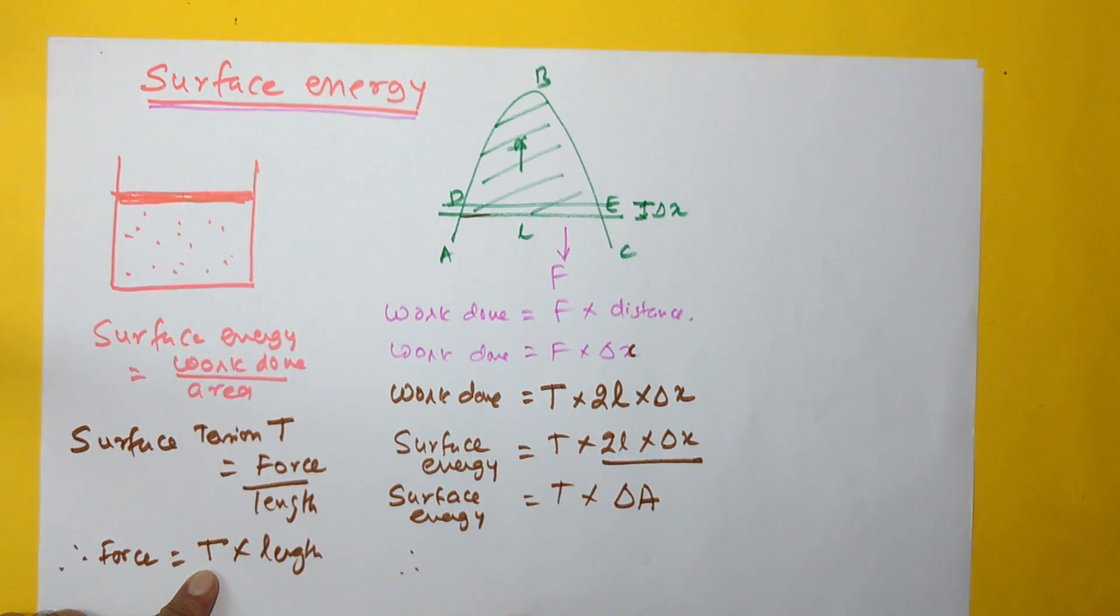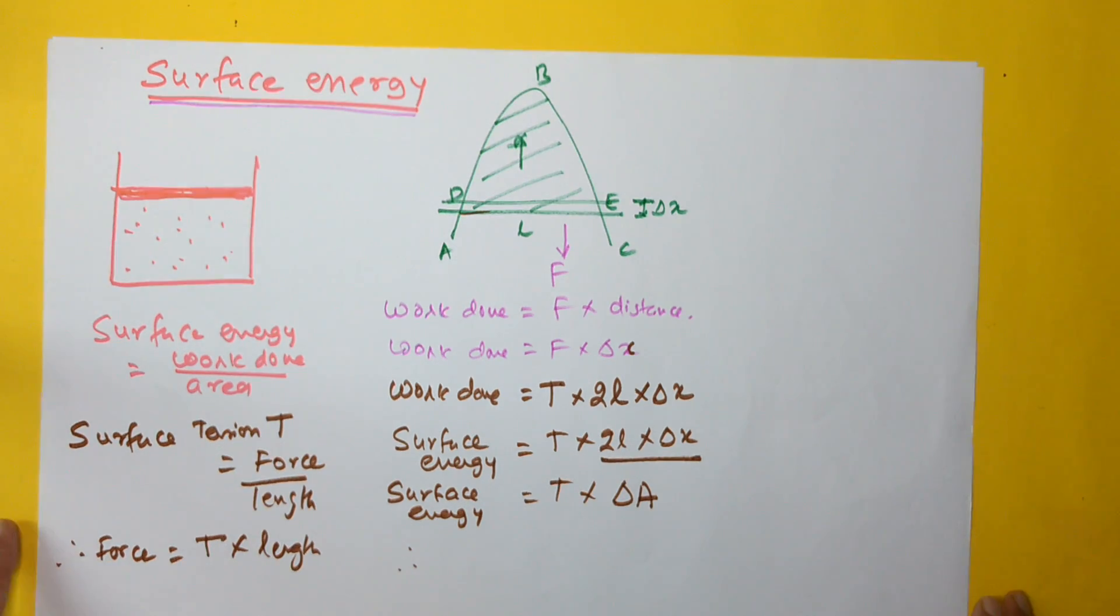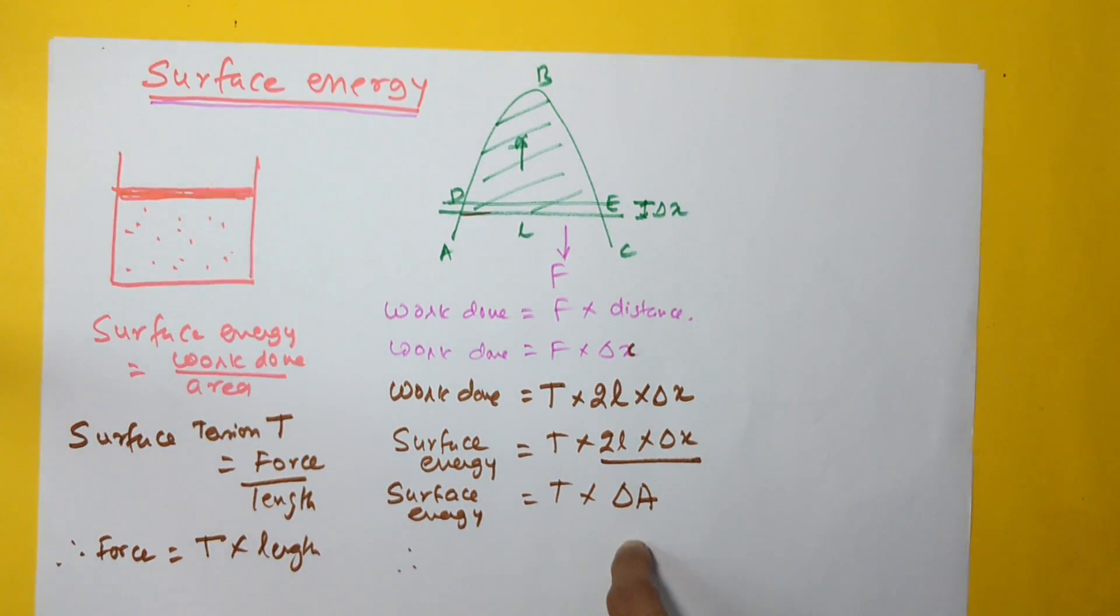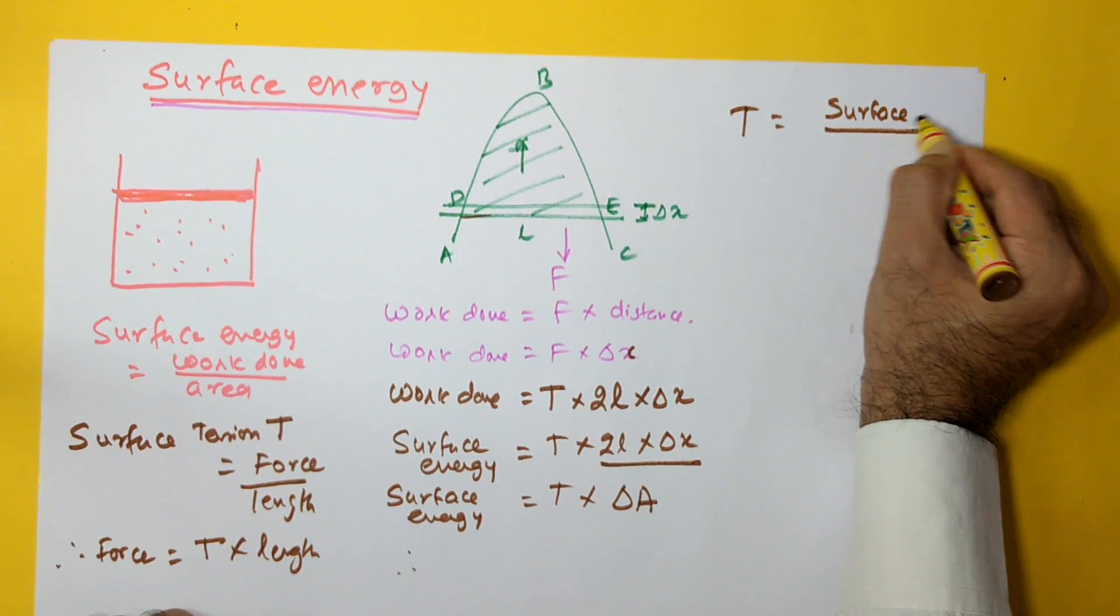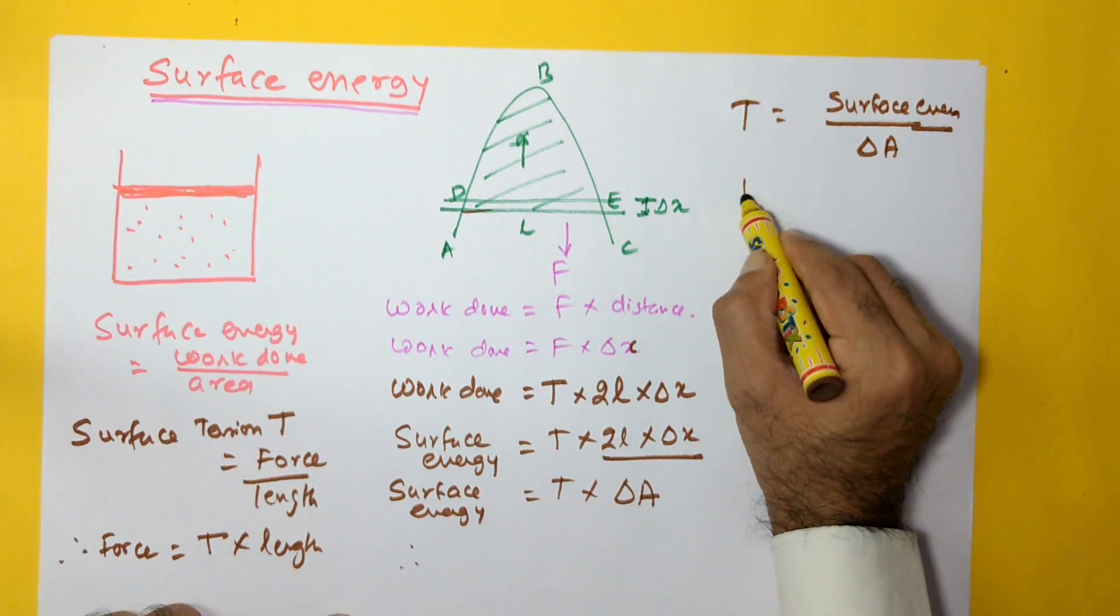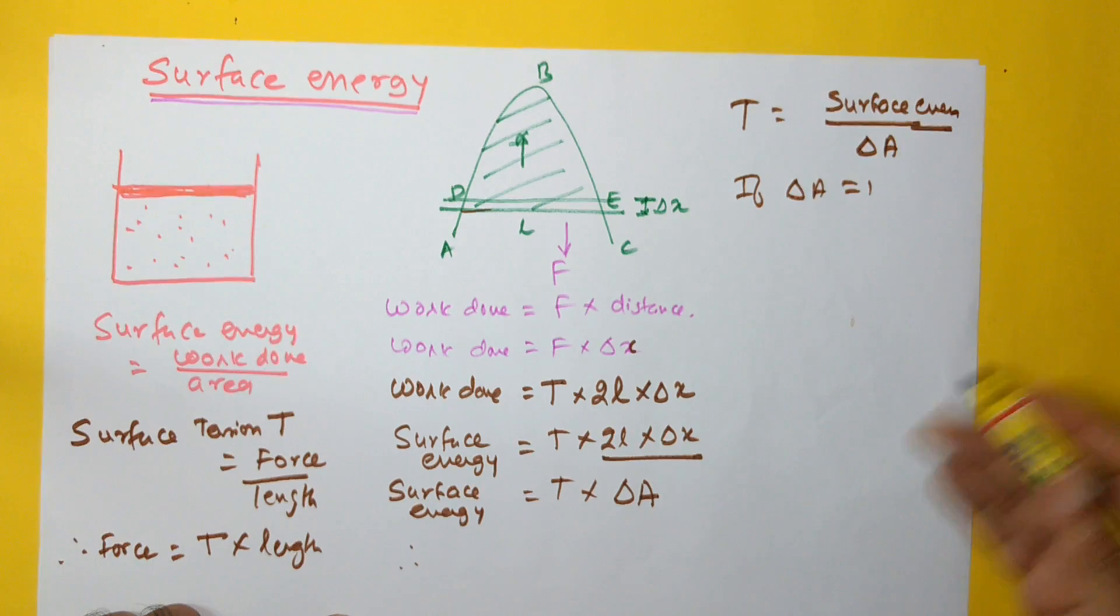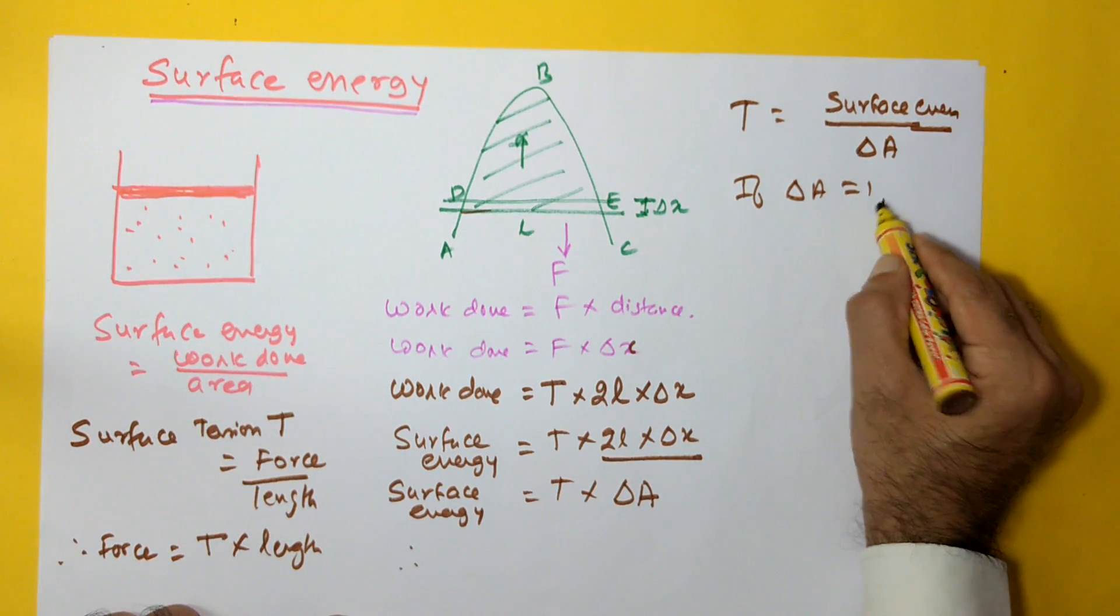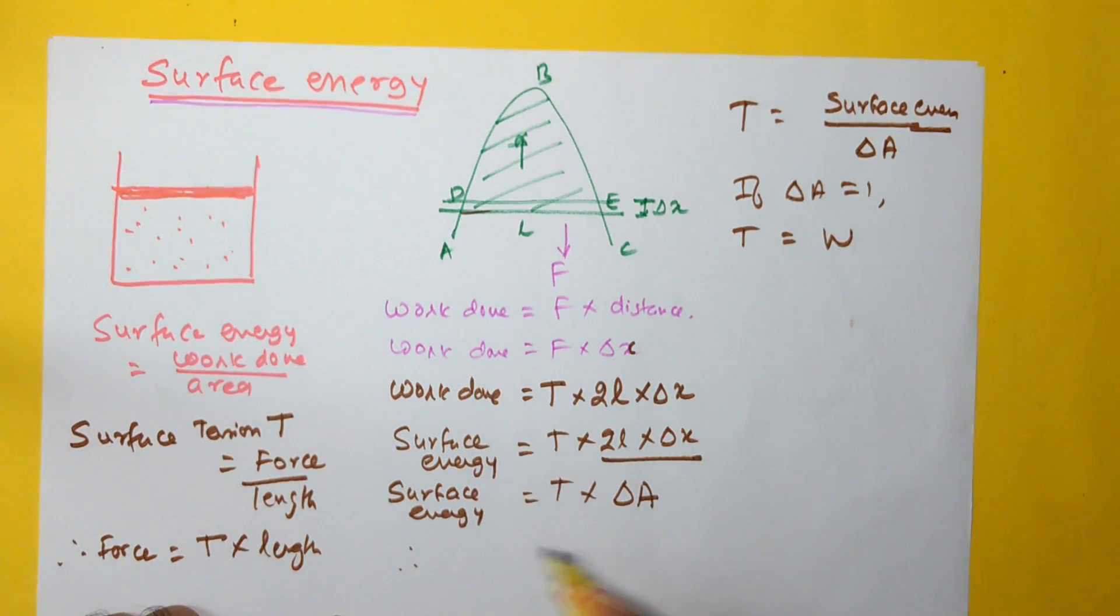Therefore, this gives me an equation for finding out surface energy. It is equal to surface tension of the film into the change in area that happens because of the surface tension. This also helps me to define surface tension as surface energy per delta A. And if delta A is equal to 1, that means delta A is either 1 centimeter square or 1 millimeter square, then T is equal to surface energy, which I can denote by W because basically it is work done.